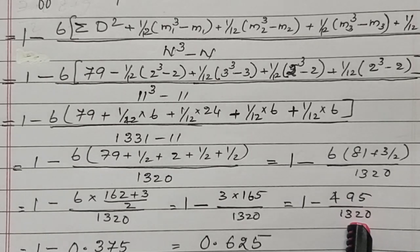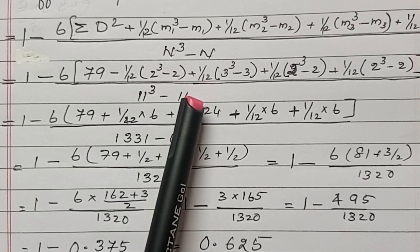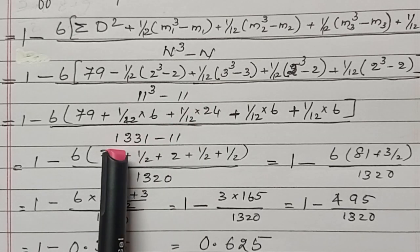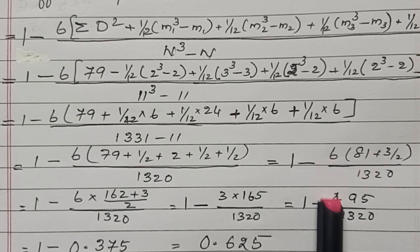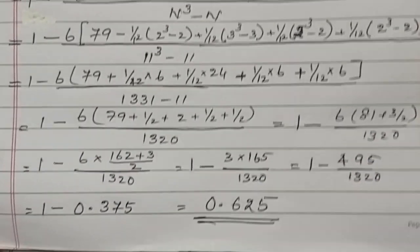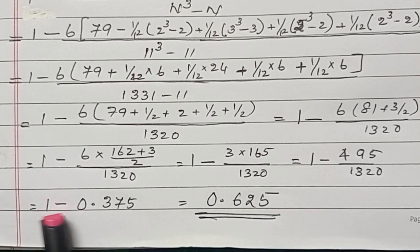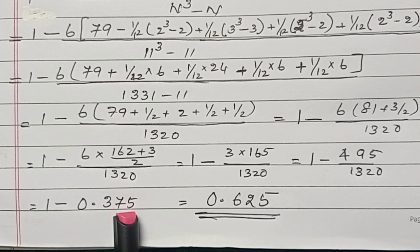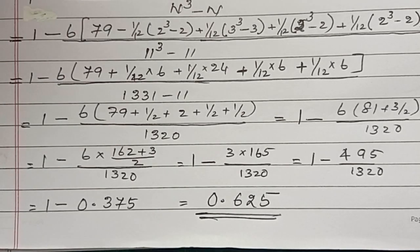Here there are 11 numbers, so 11 cubed minus 11 equals 1321 minus 11 equals 1320. Dividing these two numbers, we get 0.375. Therefore, 1 minus 0.375 equals 0.625. We know the coefficient of correlation always lies between minus 1 and positive 1. We got the answer as 0.625. It is a positive number.